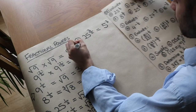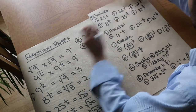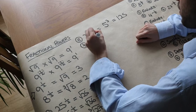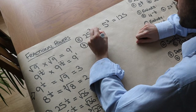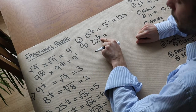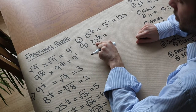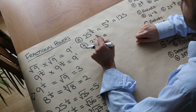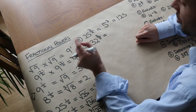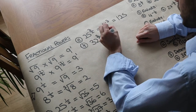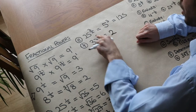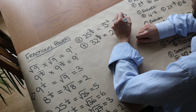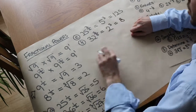For 32 to the power of 3 fifths, we need the fifth root of 32 — what to the power of 5 is 32? It's 2, since 2 to the power of 5 is 32. We then raise that result to the power of 3 from the numerator: 2 cubed is 8.